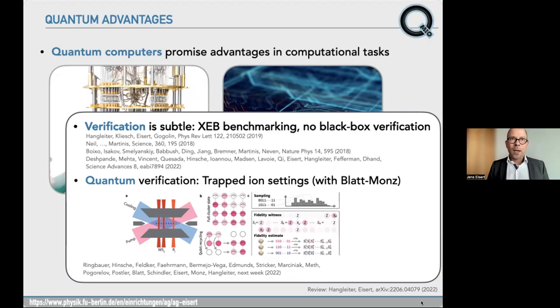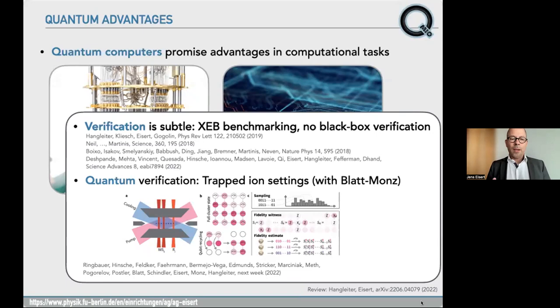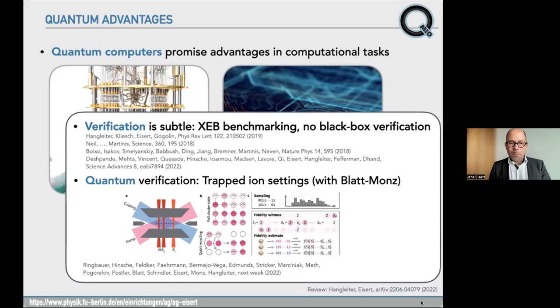If you have some trust in your devices and think that your detectors are doing something similar to what you think they're doing, then you can do notions of quantum verification. We've thought of quantum advantage settings where you can take data and get a quantum advantage, but also use quantum data of a similar type to verify the functioning of the scheme. We should be putting out data from a paradigmatic trap-ion experiment with friends in Innsbruck showing a setting that, if scaled up, would show a quantum advantage, but can also be efficiently verified.